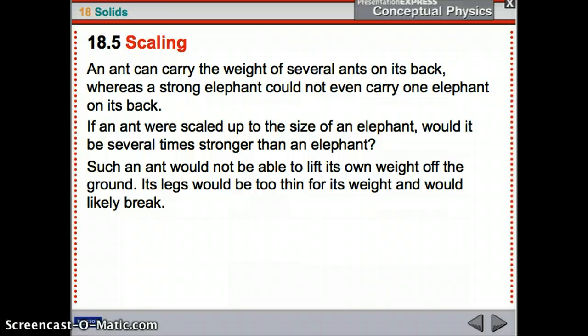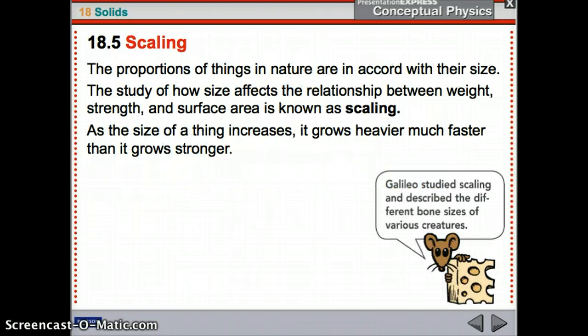So, an ant can carry several ants on its back. But a strong elephant could not carry one elephant on its back. So, let's say, let's think about that. If you take an ant, you turn it into the size of an elephant, would it be several times stronger than an elephant? Because it can carry several ants. No. Because it actually wouldn't even be able to stand up. Because its legs would be too thin and they would break. So, elephants are still stronger. But proportionally, it's different. So, the proportions of things in nature are in accord with their size. And the study of how size affects the relationship between the weight, strength, and surface area is known as scaling.